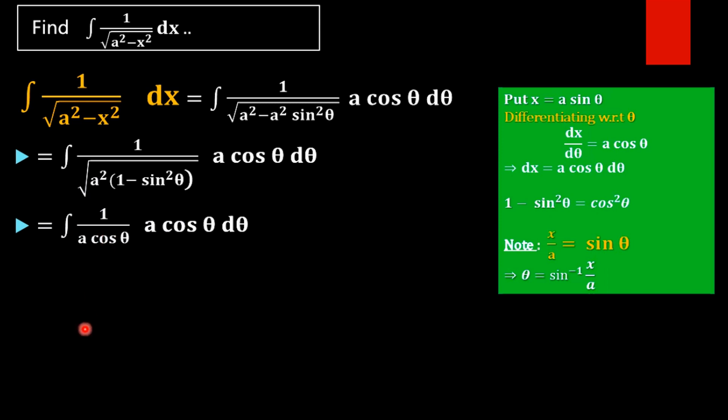Now, a cos theta, a cos theta are common here. We can cancel them each other. Then what will remain here? That is integral d theta.